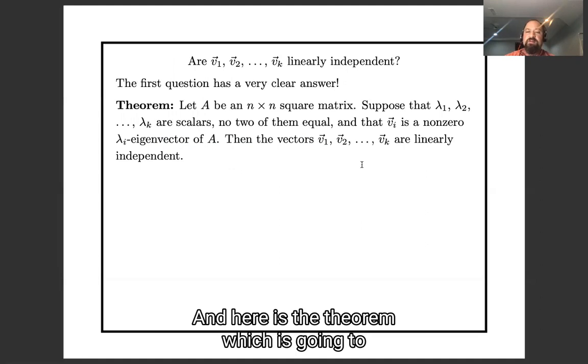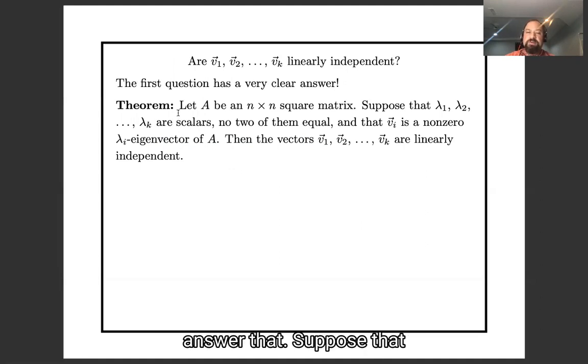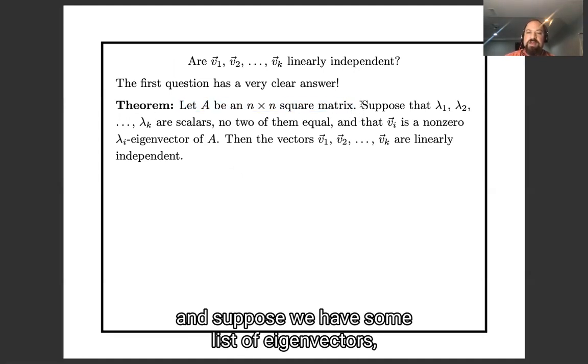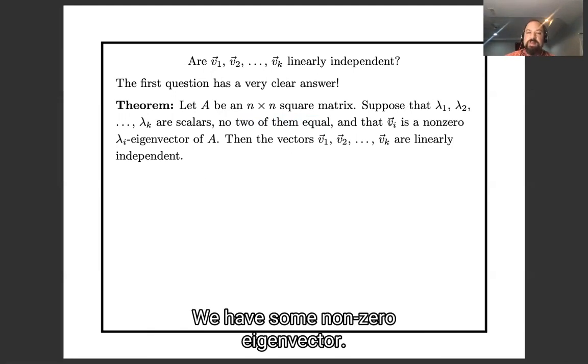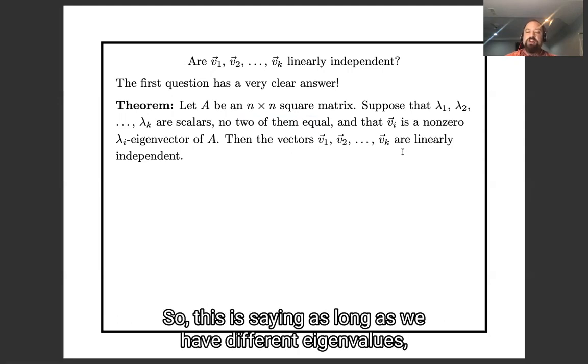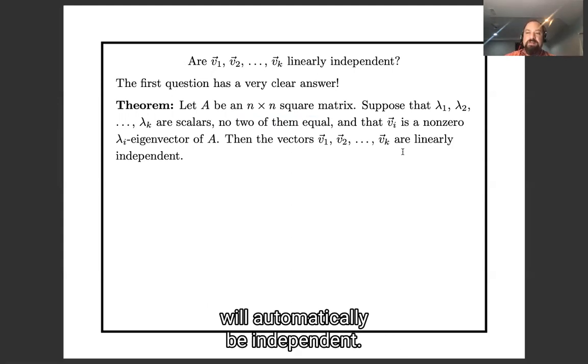And here is the theorem which is going to answer that. Suppose that we have a square matrix, and suppose we have some list of eigenvectors... sorry, we have a list of eigenvalues, no two of which are equal. And for each of those eigenvalues, we have some non-zero eigenvector. Then those vectors are linearly independent. So this is saying, as long as we have different eigenvalues, the eigenvectors we have will automatically be independent.